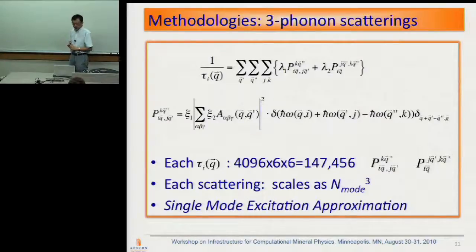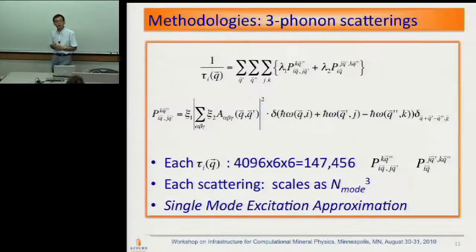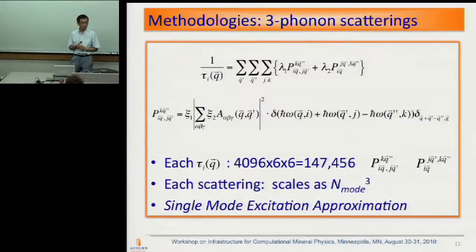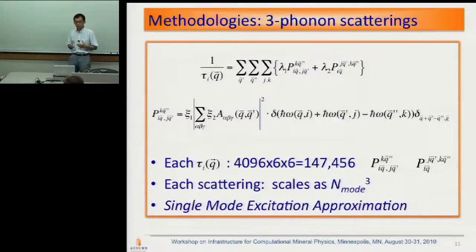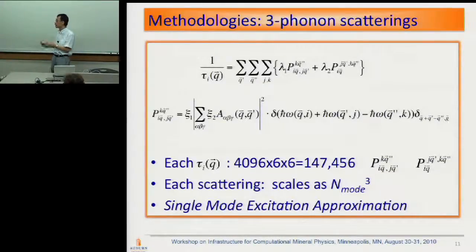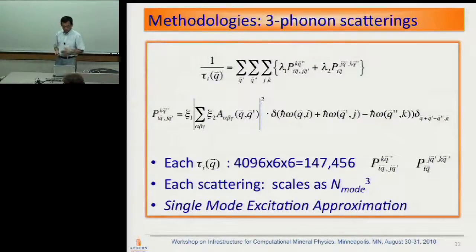This calculation is not that expensive for a two-atom cell like MgO, but the problem is it scales very badly — it scales as n-cubed. That's why for MgO we can do it with our local facility, but for perovskite, which has 20 atoms per unit cell and is 10 times more atoms, that translates to n-cubed scaling, so for that one we use the TerraGrid supercomputing facility.